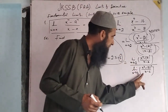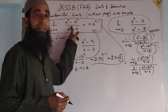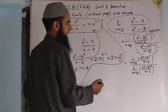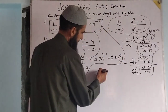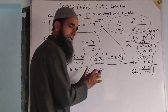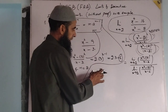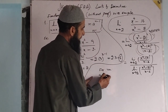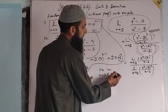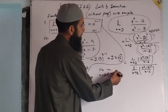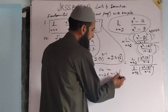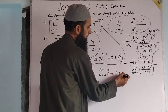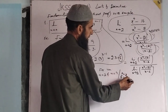For the numerator, comparing with the fundamental limit, we get a is equal to 2 and n is equal to 4. For the denominator, comparing with the fundamental limit, a is the same as 2, but n is here 3.